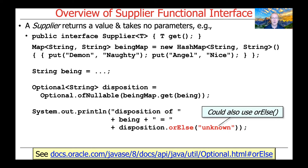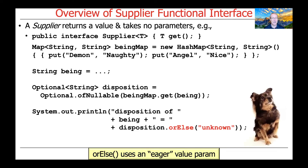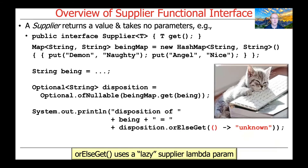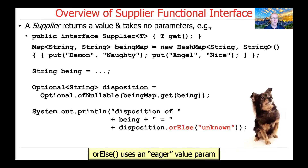In contrast, we could have used the orElse method, which is another method defined on Optional. This method just takes a value — in this case, a string. As a consequence, it's what's known as an eager method, as opposed to a lazy method. So that value will be set when the call is made.